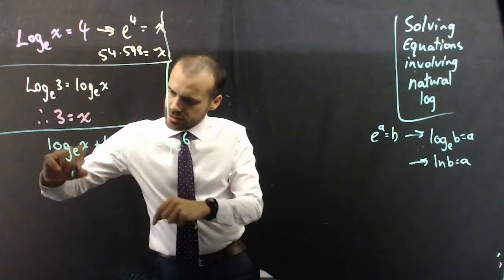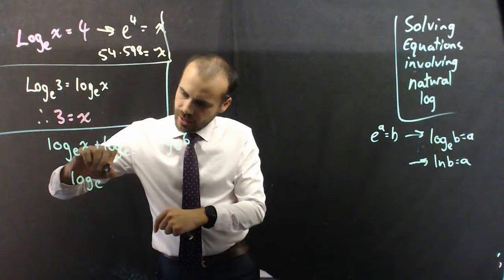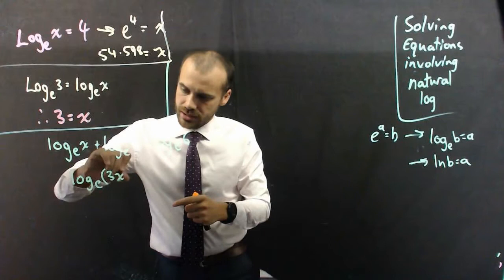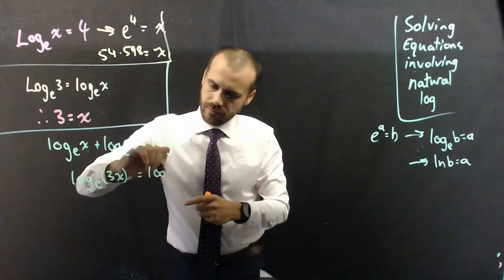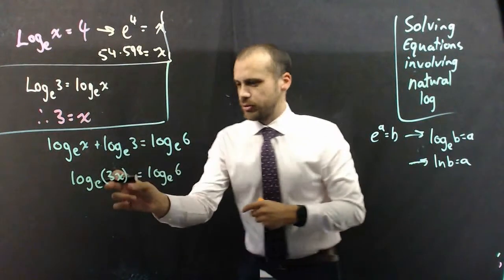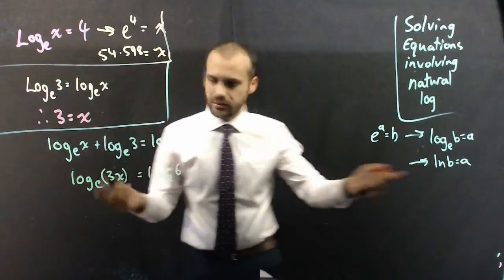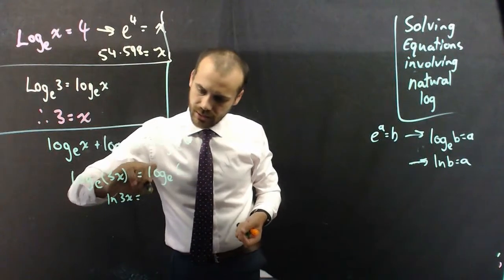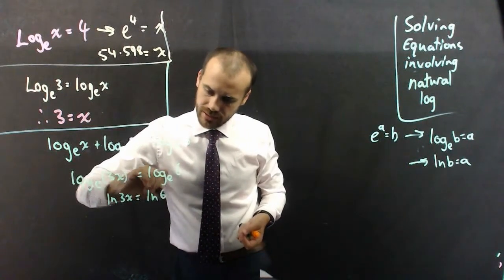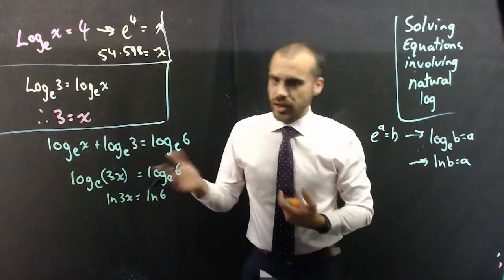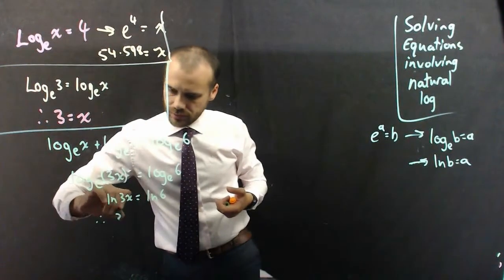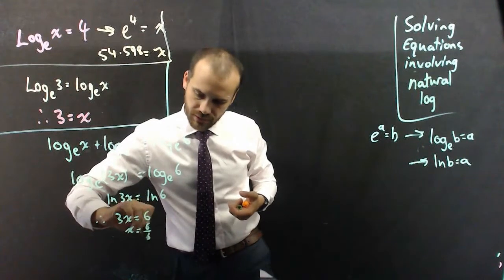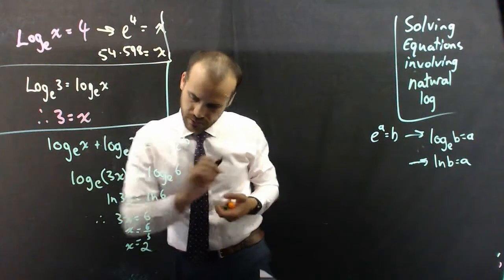I can smoosh them together by multiplying our exponents. So, here, it's going to be log base e x times 3, or 3 times x, which is just 3x. Now, I don't really need those brackets there, so I'll just write it. And while I'm at it, I'm going to stop writing log base e. I'm just going to write ln 3x equals ln 6. So, if ln 3x equals ln 6, therefore, 3x equals 6. And x equals 6 over 3. x equals 2.